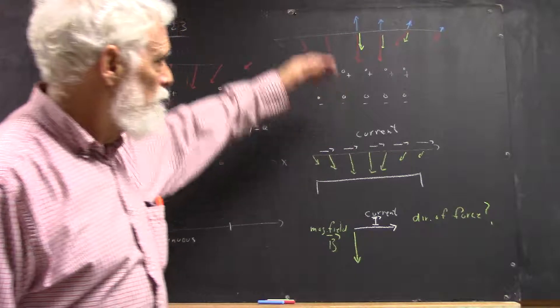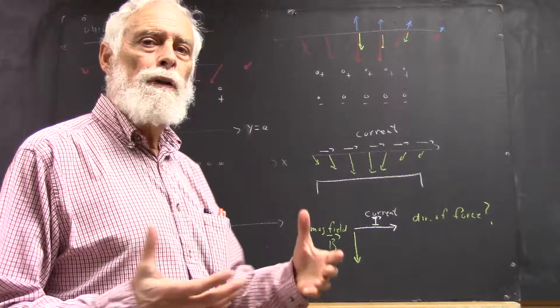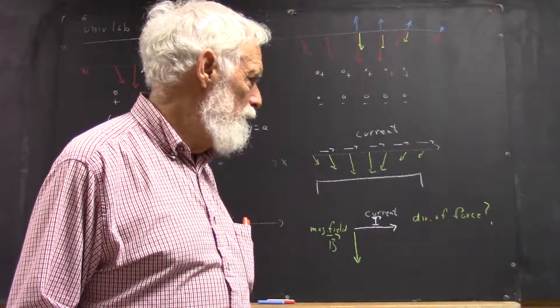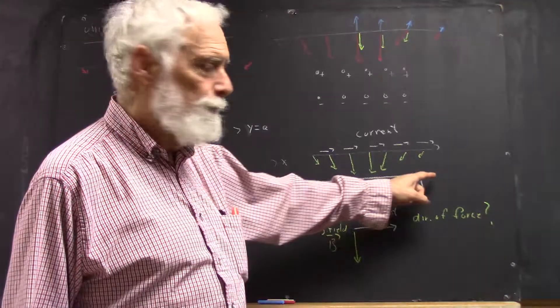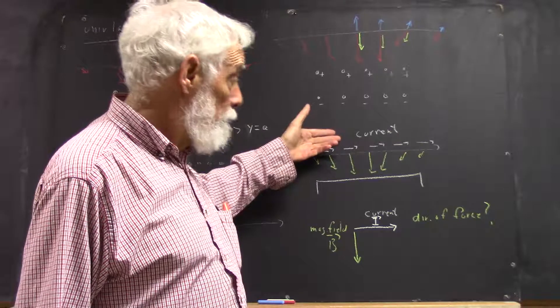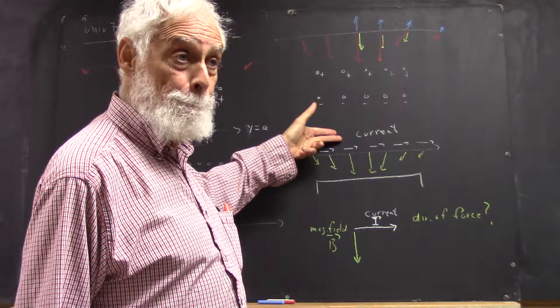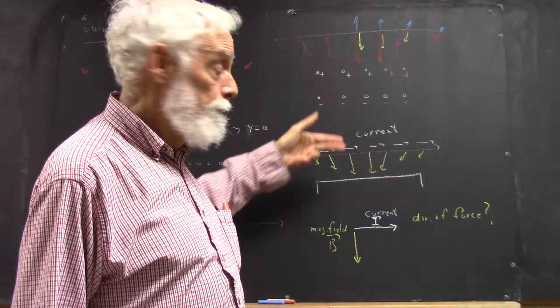So with this general idea in mind, what we really want to come down to is: how do you orient the magnet to get the maximum possible force on the aluminum strip? Right? Make sense?